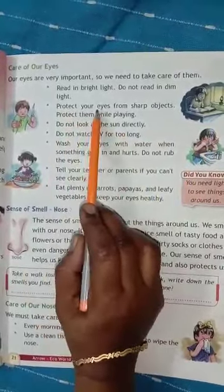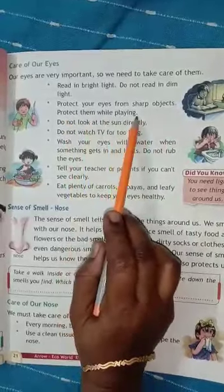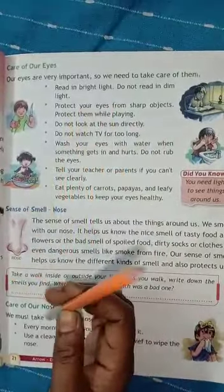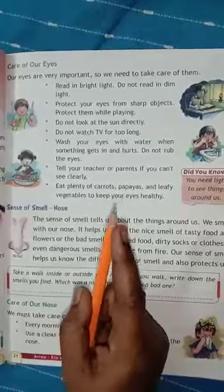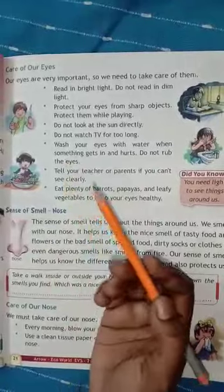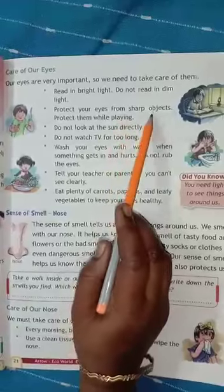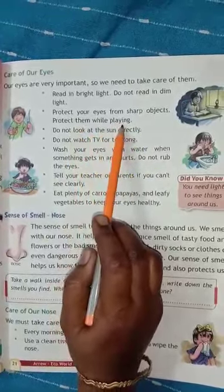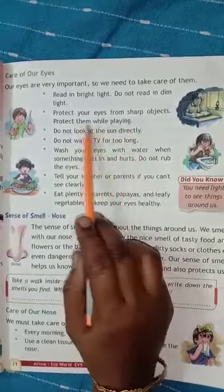Number 2 is protect your eyes from sharp objects — protect them while playing. The pencil has a sharp point, and sometimes children tend to poke someone with it and they get hurt. You should not use these kinds of sharp objects carelessly, and you must be very careful about your eyes while playing.